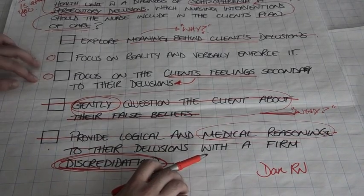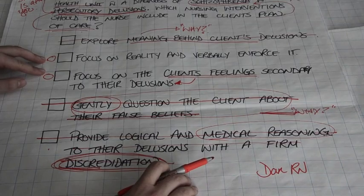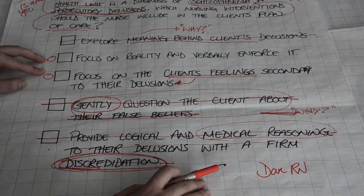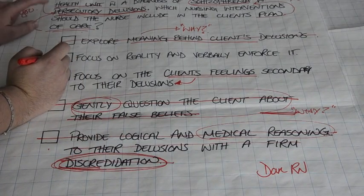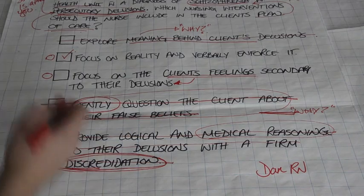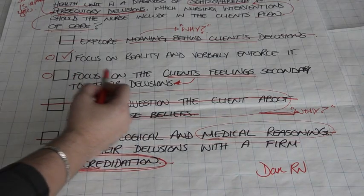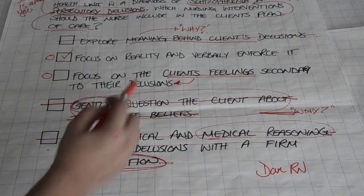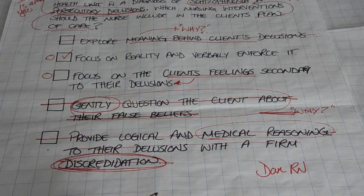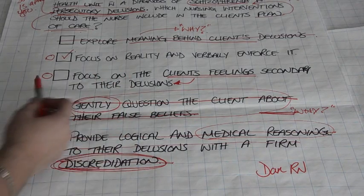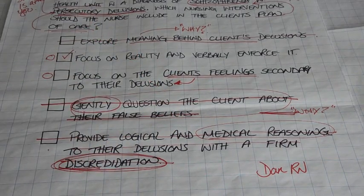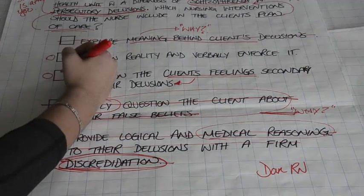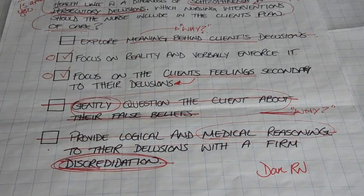We're left with these two. First: focus on reality and verbally enforce it — this will limit the time the client spends on their delusion. Second: focus on the client's feelings secondary to their delusions — we do want to know how our client is feeling and how their feelings reflect this condition. Yes, we do. So we're going to choose both of those as our answer choices.